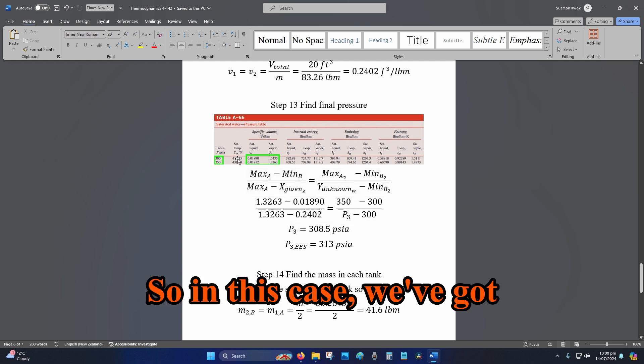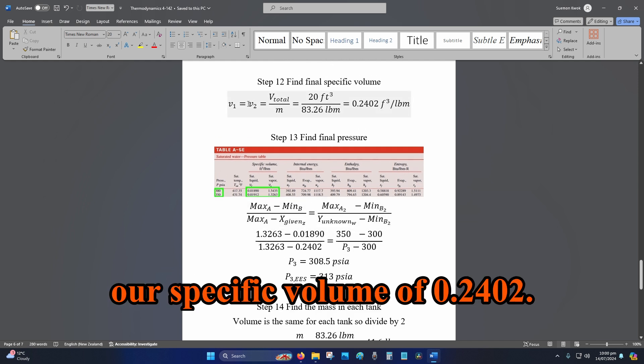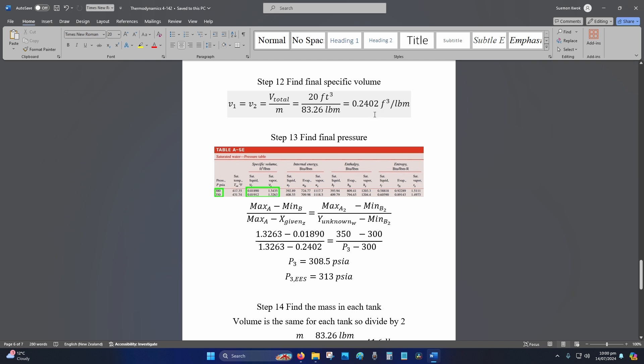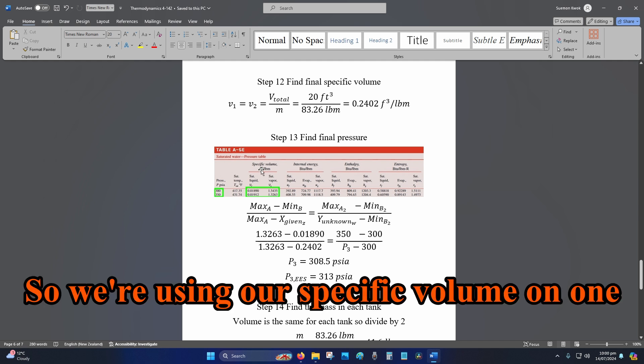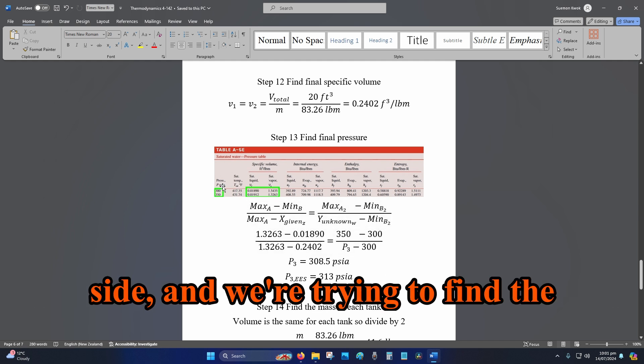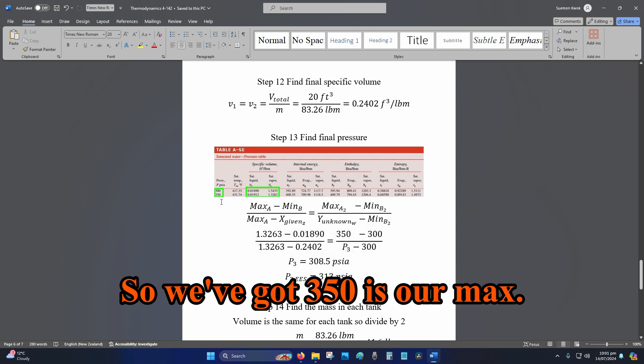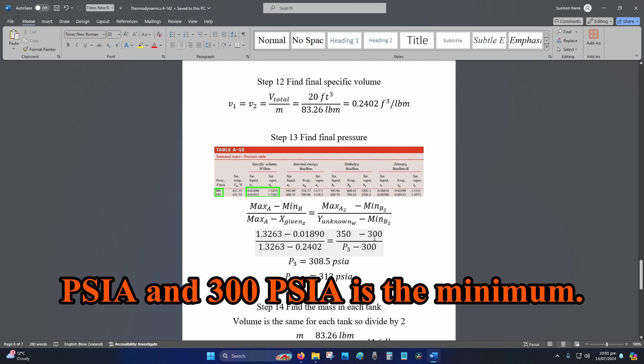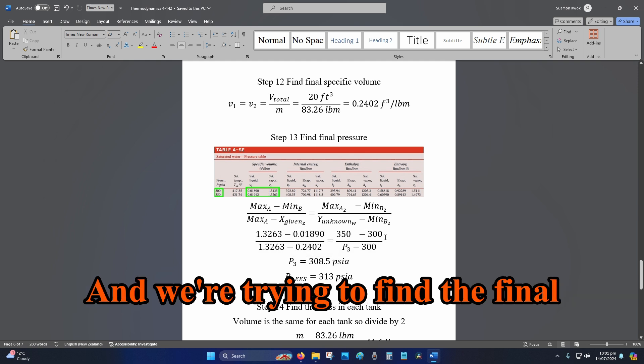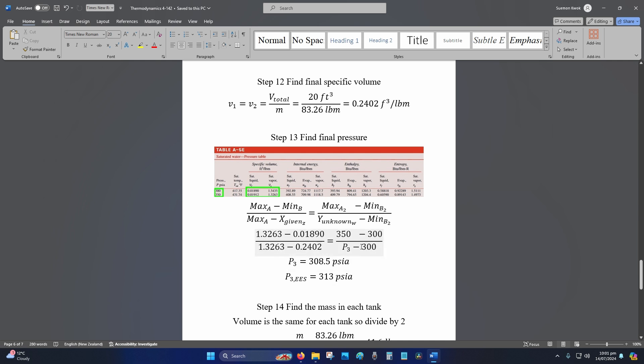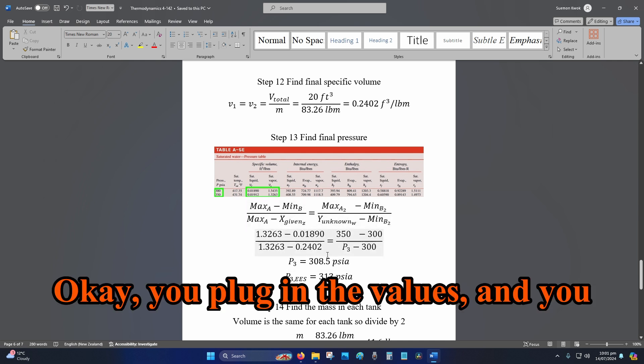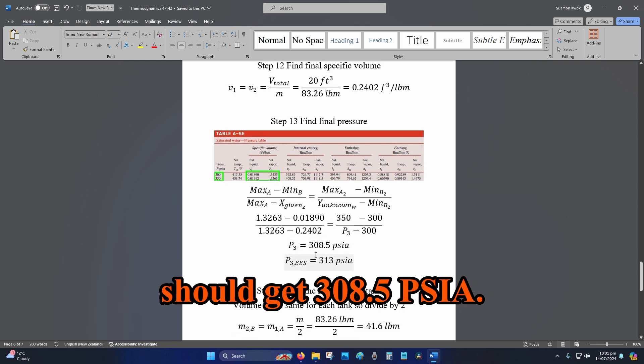So, in this case. We've got our specific volume of 0.2402. That is our given. So, we're using our specific volume on one side. And we're trying to find the pressure on the other side. So, we've got 350 is our max PSIA. And 300 PSIA as the minimum. And we're trying to find the final pressure, which is P3. Okay. You plug in the values. And you should get 308.5 PSIA.